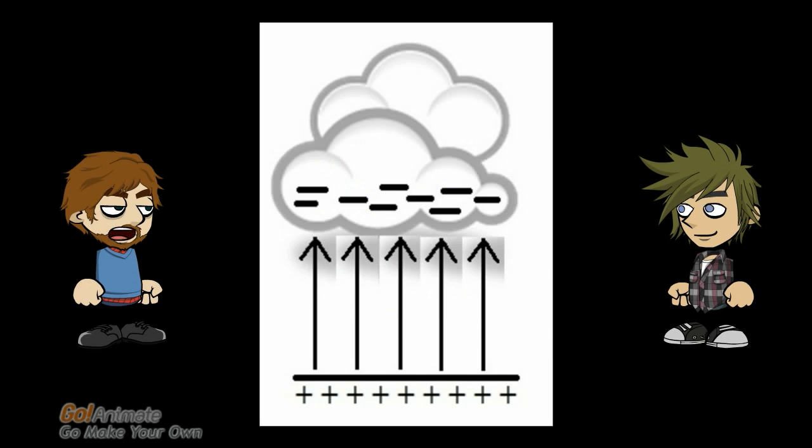A storm cloud builds up negative charge on the bottom of the cloud. Then the electrons on the cloud repel electrons in the ground pushing them deeper into the ground, leaving a positive surface. An electric field is created between the cloud and the ground and a difference in electric potential exists between the ground and the cloud.